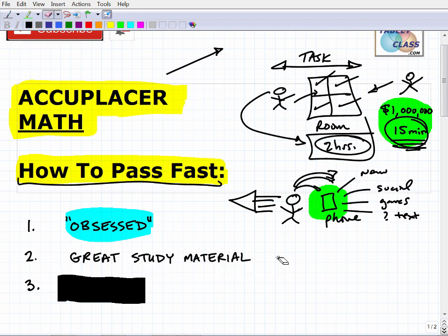The second point is you need to have great study material. It has to be organized. If you're like, okay, I'm ready to go, I'm obsessed, I'm going to do it, then what are you studying from? This is where you need to get organized. You need to get yourself into a good, solid program of study, something that you can rely on.